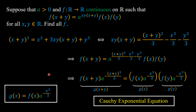If we suppose that g(x) equals f(x) times a to the power of minus x³ over 3, we can see that this functional equation is actually the Cauchy exponential equation. Since f is a continuous function and a to the power of minus x³ over 3 is also a continuous function on the real numbers, g is a continuous function on real numbers.